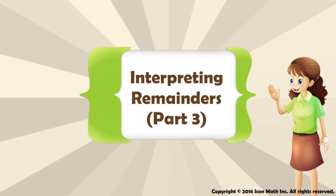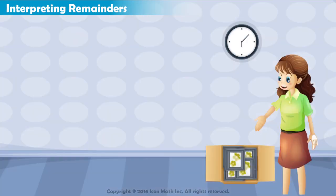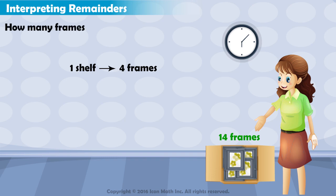Interpreting Remainders. Let's now look at the last case of interpreting remainders. Diana is putting frames on shelves in her house. She has 14 picture frames, and she wants each shelf to have 4 picture frames. How many frames will not be on the shelves?